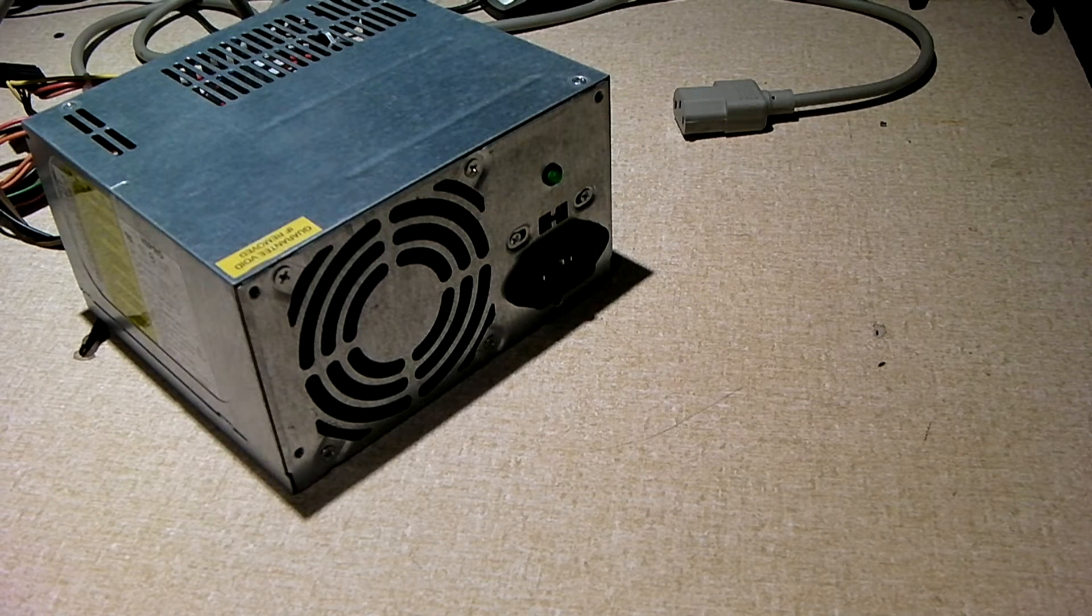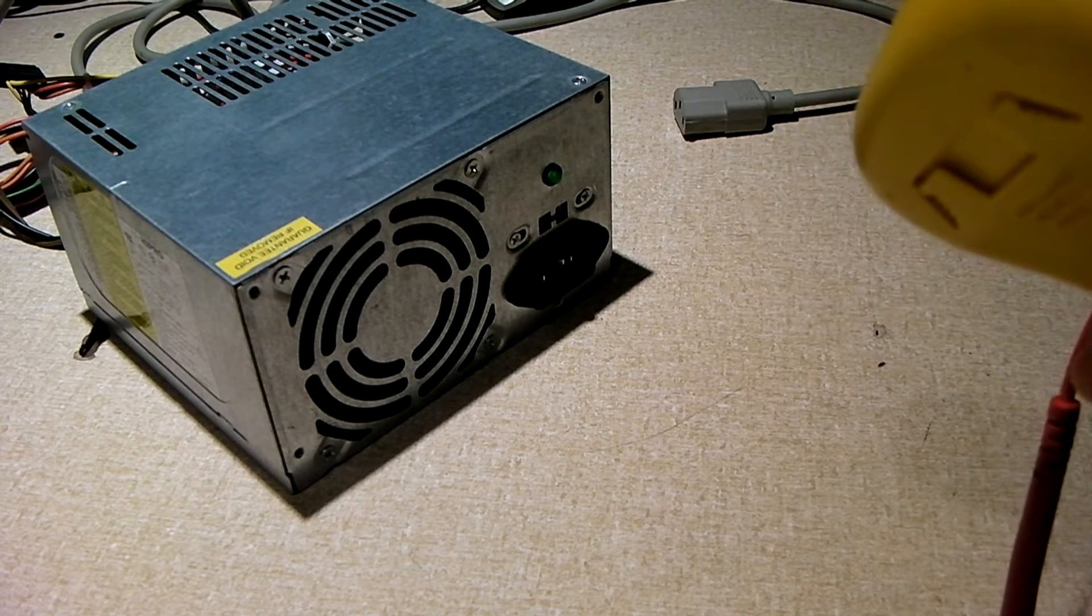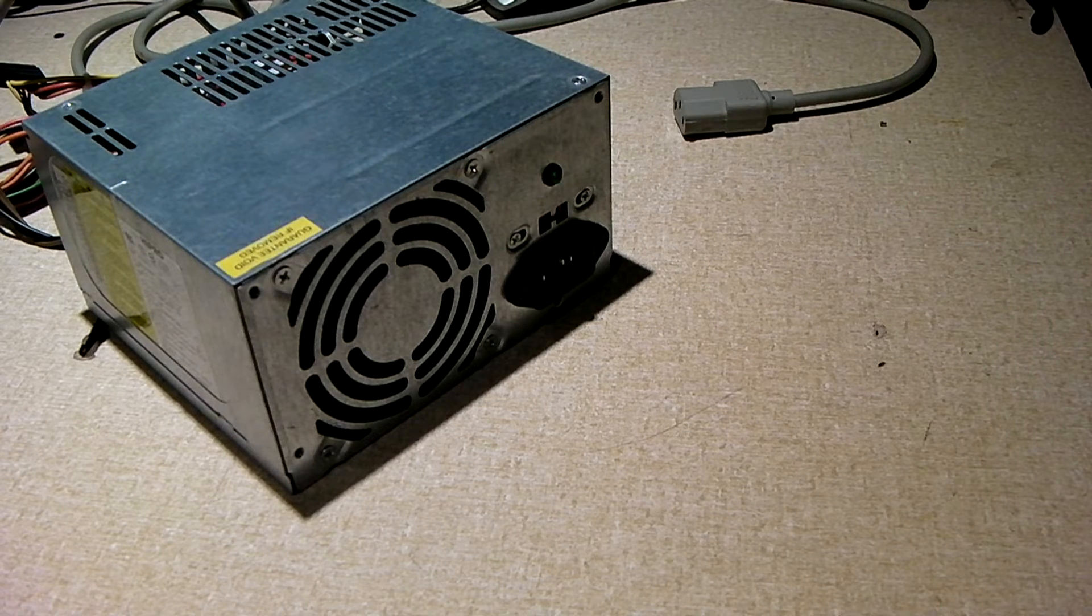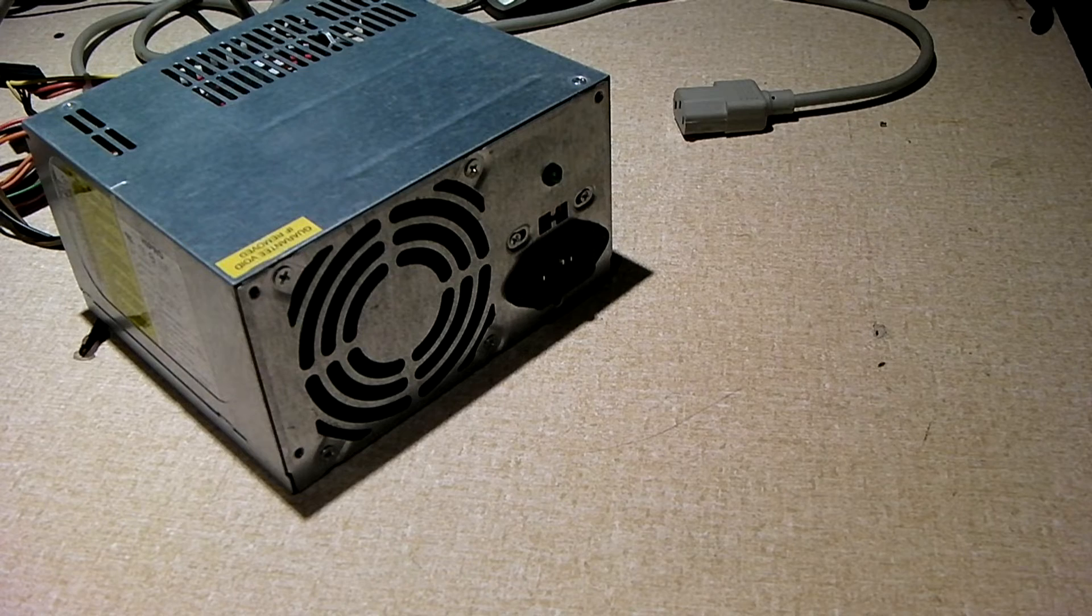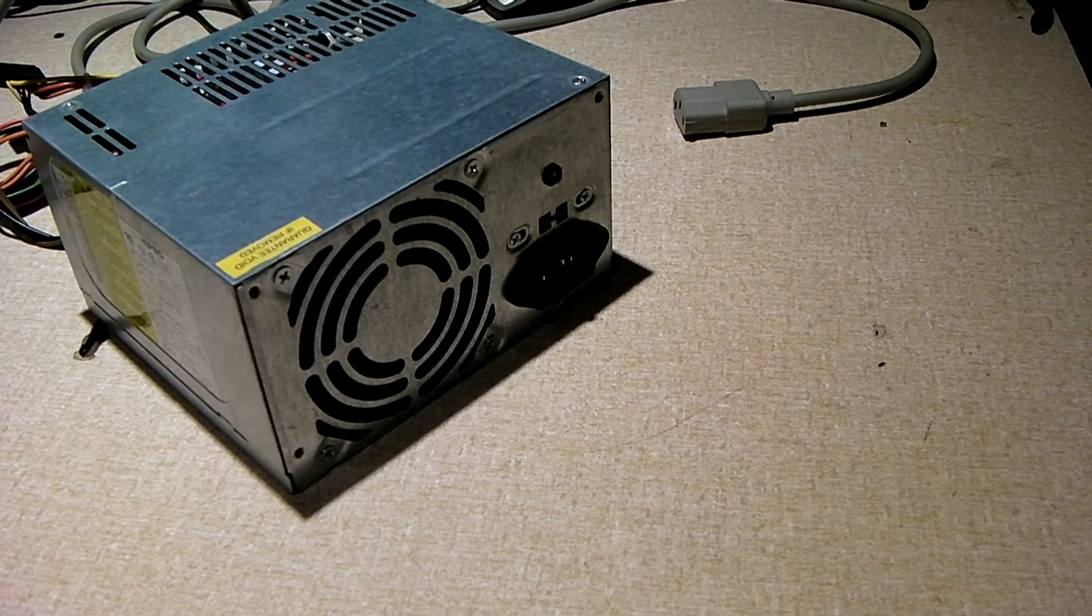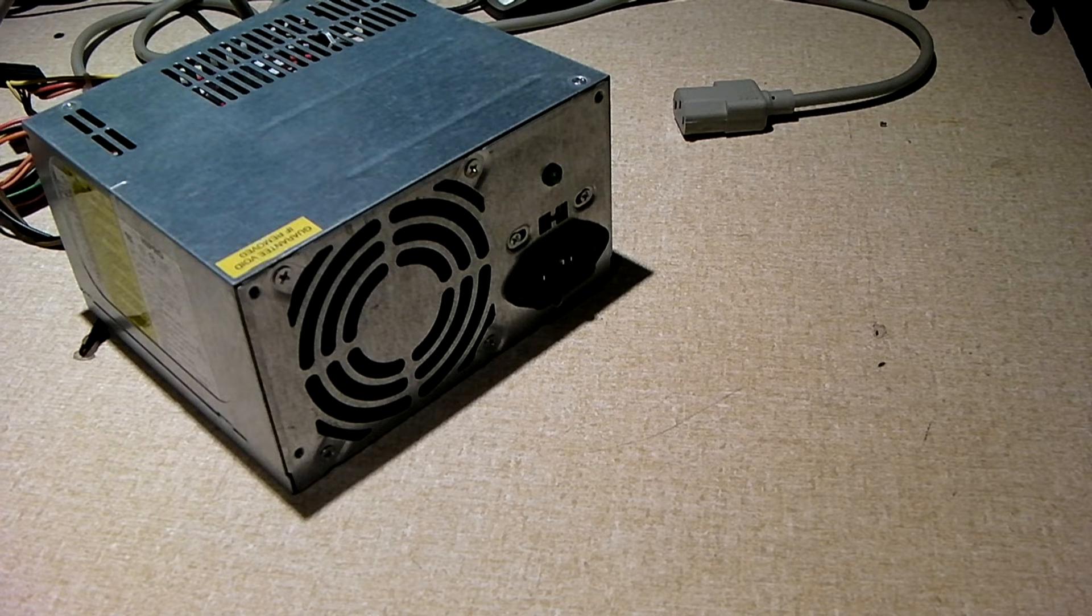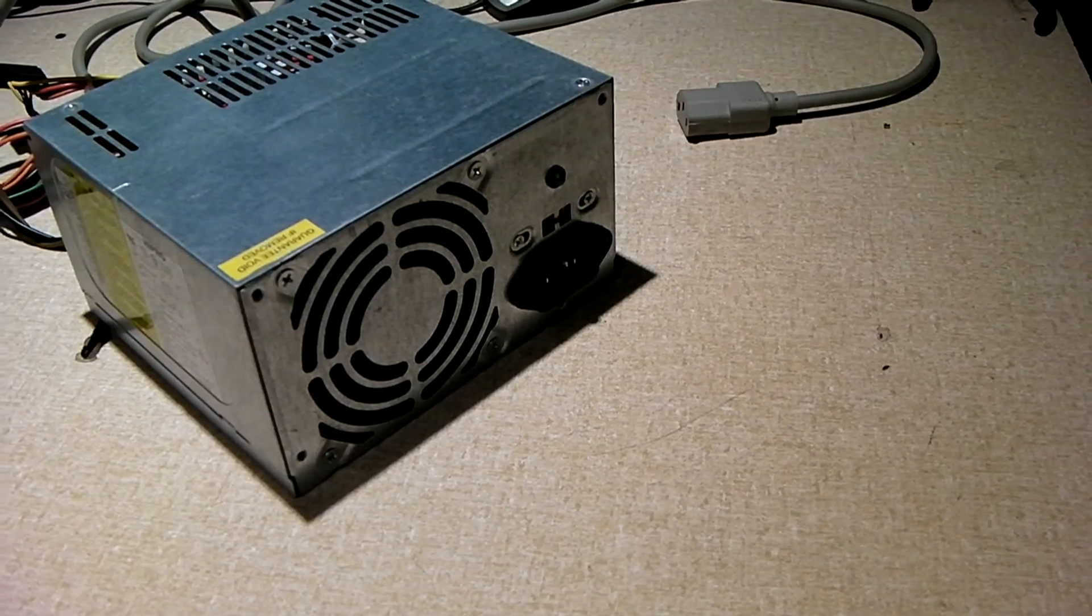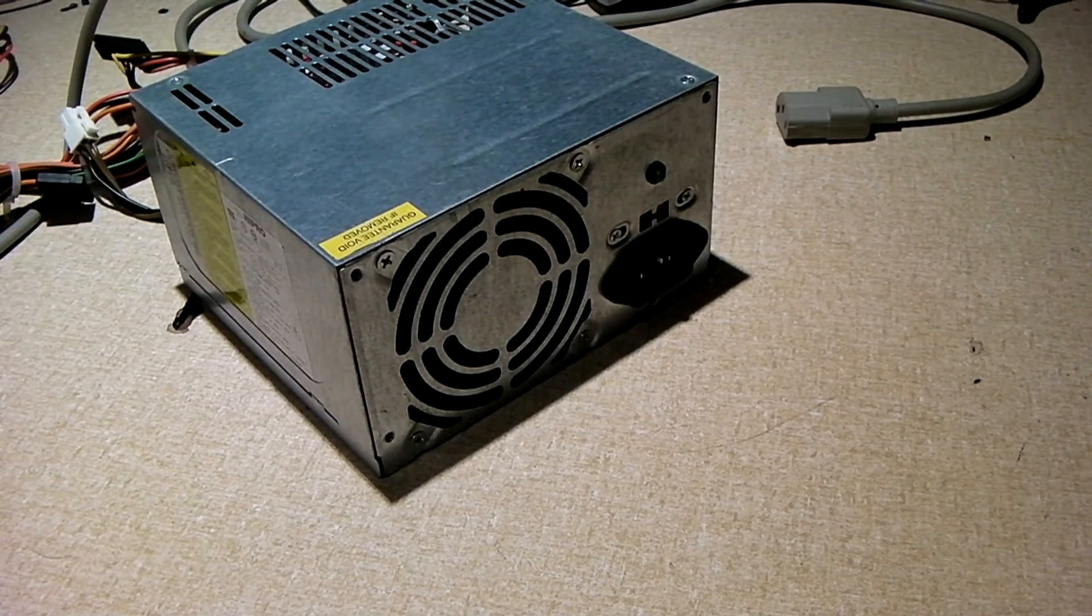Take the black of your multimeter, stick it somewhere in the case on the actual chassis to a ground source, and take the positive and probe it into where the gray wire is. And check and see if you get 5 volts when the power supply is powered on. Hopefully this is helpful. Hope you guys enjoyed the video. Thanks for watching.